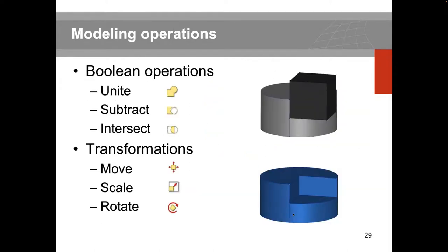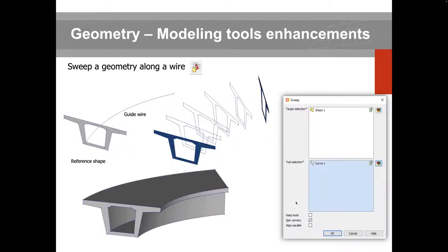You can perform modeling operations — unite, subtract, or intersect — and transformations such as move, scale, and rotate. You can also sweep your geometry: for instance, a bridge-type example where you sweep a reference cross-section — such as a box girder cross-section — along a guide curve, which can be curved rather than straight.